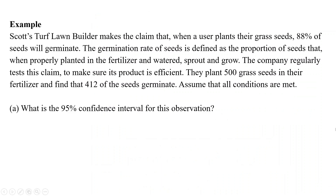Our next example involves a specific brand that makes a claim that when users plant their grass seeds, 88% of the seeds will germinate. The germination rate is defined as the proportion of seeds that, when planted in the fertilizer and watered, sprout and grow. The company regularly tests this claim to make sure its product is efficient. They plant 500 grass seeds in their fertilizer and find that 412 of them germinate. Assume all conditions are met.